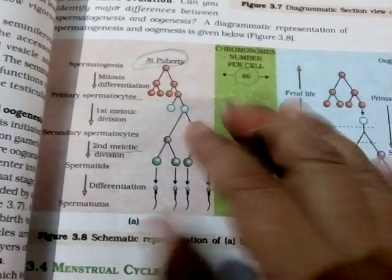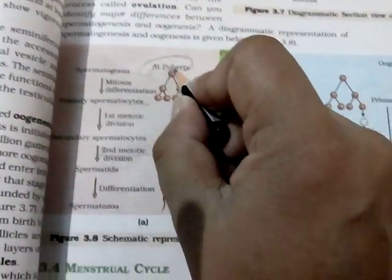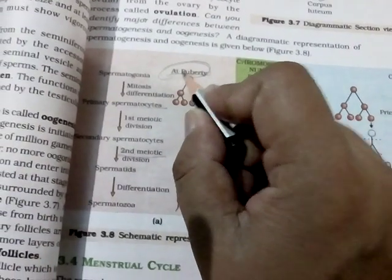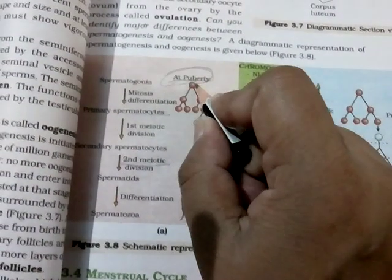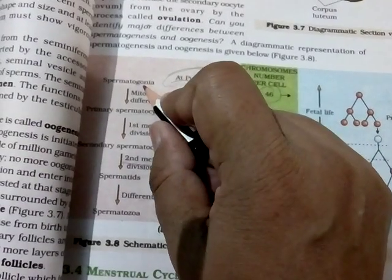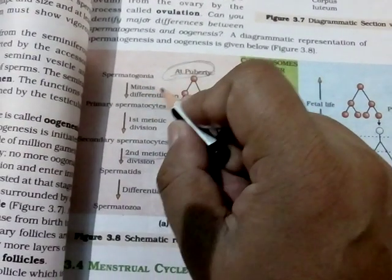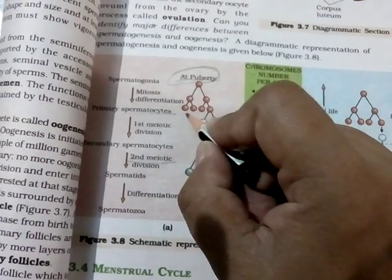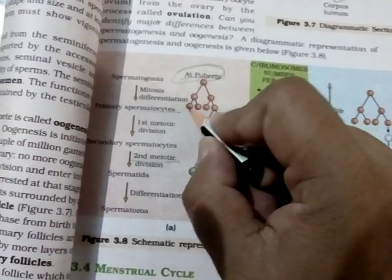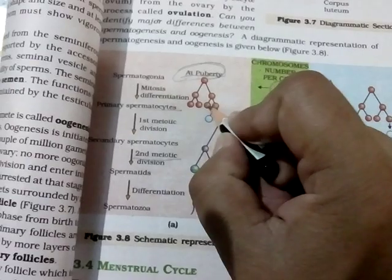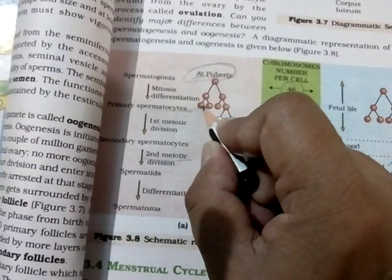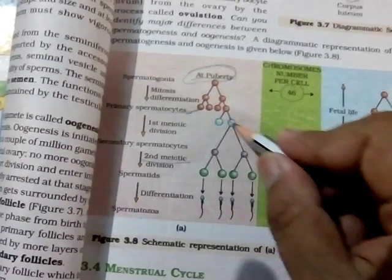What is the difference between oogenesis and spermatogenesis? At the puberty stage in the male body, the spermatogenesis process starts, through which the spermatogonia cells of the testes divide by mitotic divisions and increase their number — one cell divides into two cells, two cells become four cells. These cells are known as primary spermatocytes.